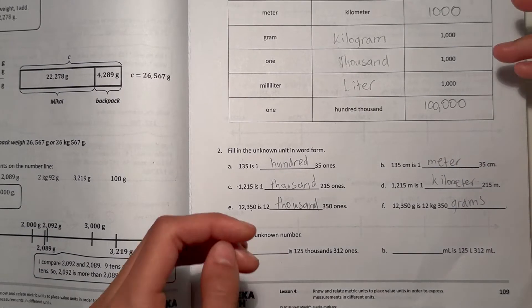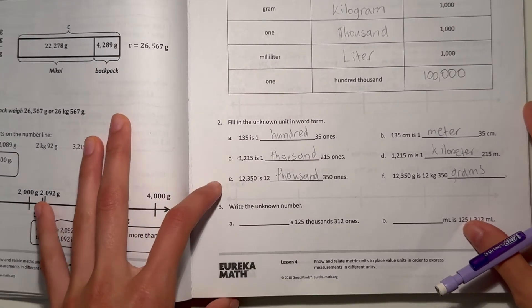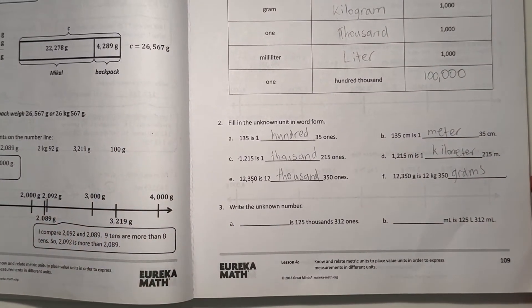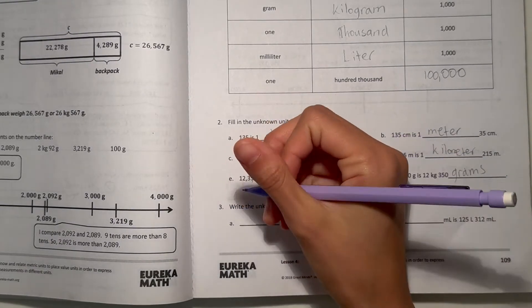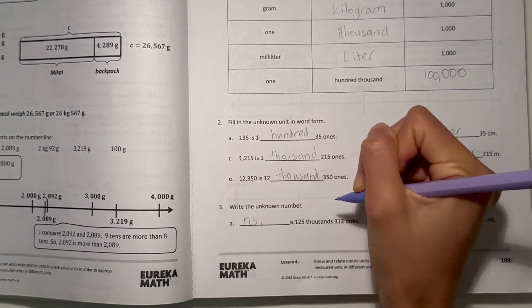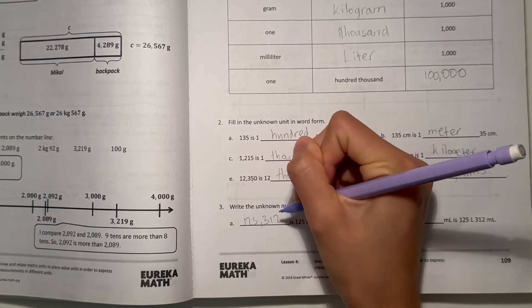Alright, number 3, write the unknown number. Alright, so A, blank is 125,312 ones. Let me just write our number. So that's our answer for A.